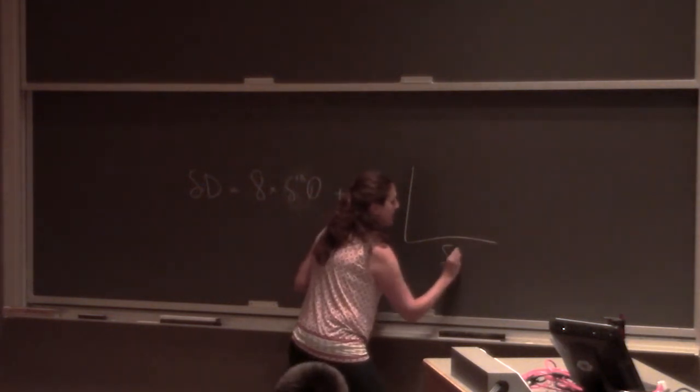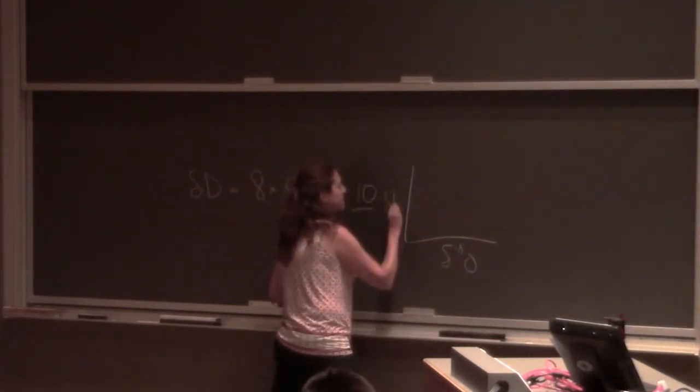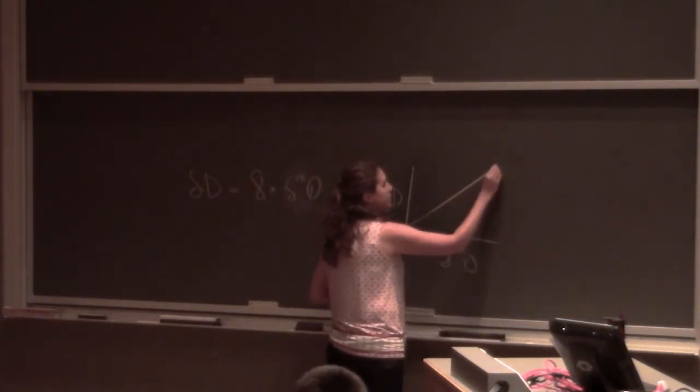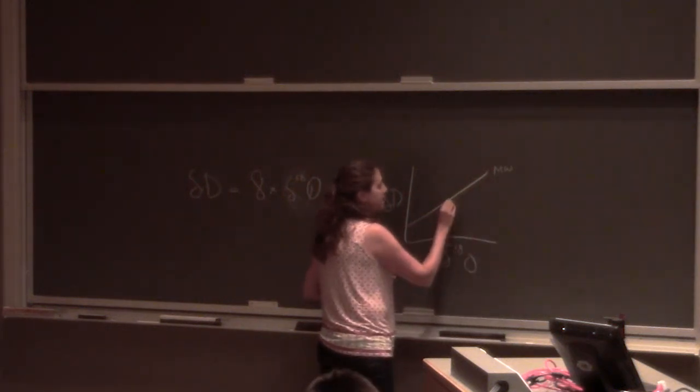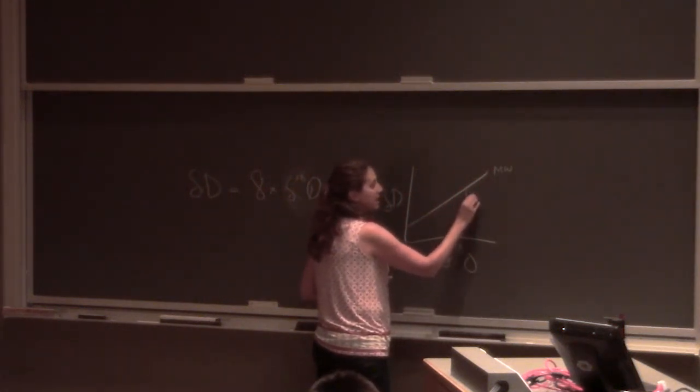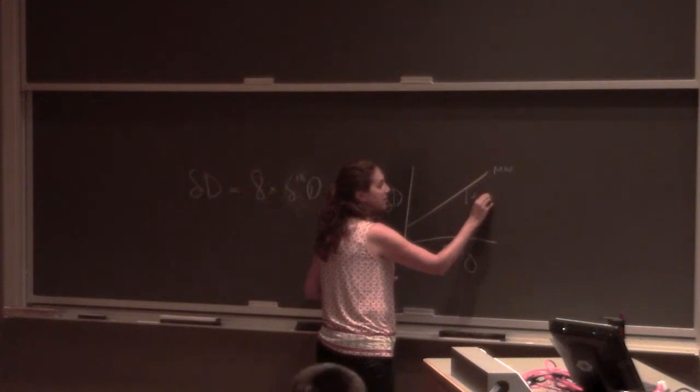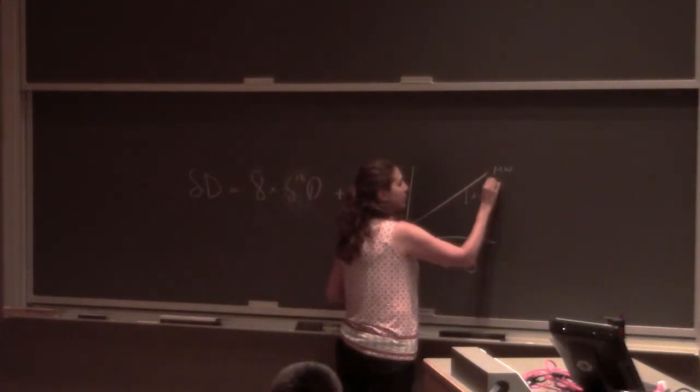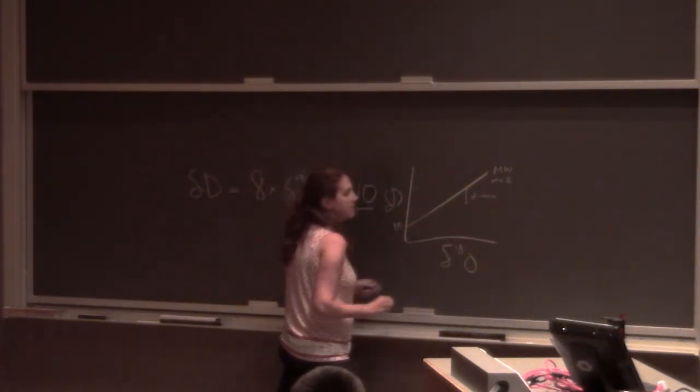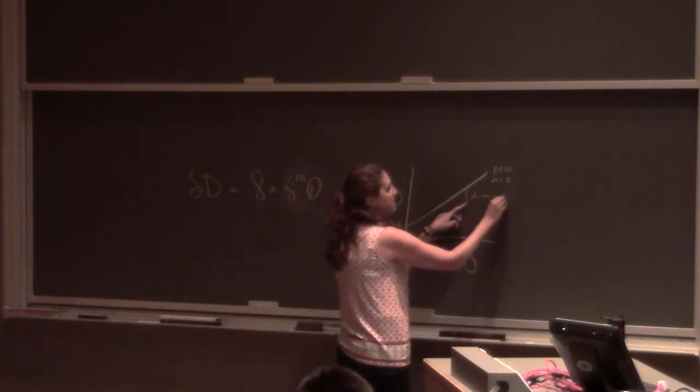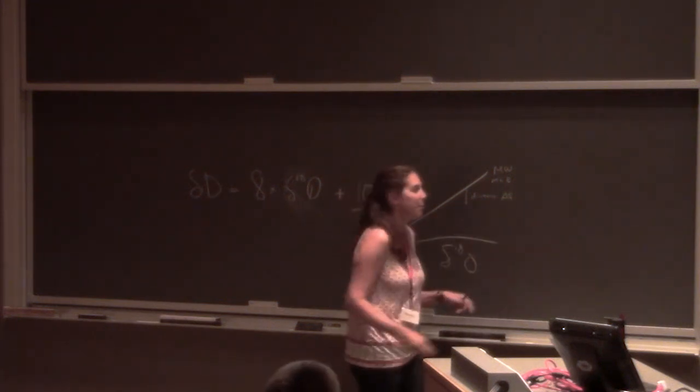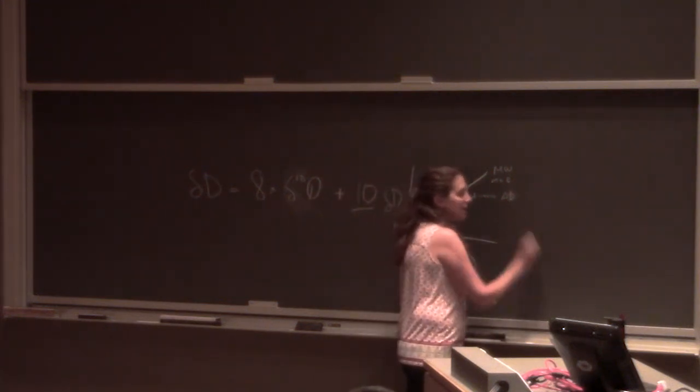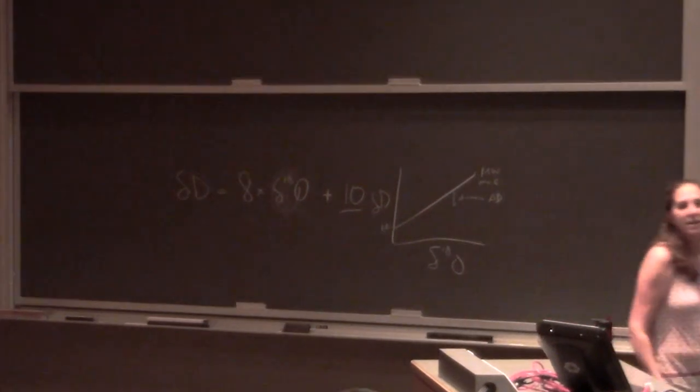So if you have delta 18-O and delta D, and this is your line with your meteoric water line, right? Any deviation from this, right, you basically calculate it, and that's your D excess, right? If this is your line, and this is with a slope of 8, and this is, oh sorry, this is 10. This would be the intercept of 10, and this would be your D excess. So you could basically call that capital delta, capital D if you wanted to, right? It's the same idea. You basically define it. You make your own space. That's useful in some sort of capacity.